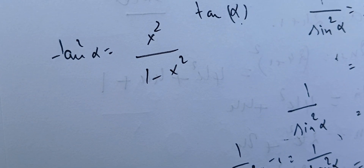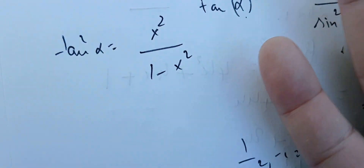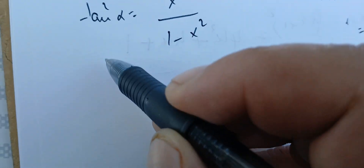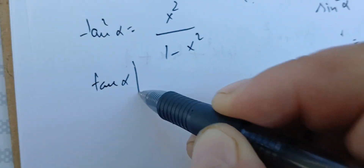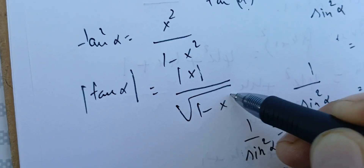Since sin(α) = x, we substitute to get tan²(α) = x² / (1 − x²). Taking the square root of both sides, we have |tan(α)| = |x| / √(1 − x²), since the denominator is always positive for x in (−1, 1).